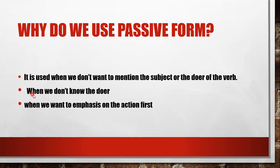Two: when we don't know the doer. ممكن احنا ما بنعرف مين قام بالفعل. مثلاً بندخل غرفة الصف بنلاقي الدروجة مرتبة، بنحكي 'الدروجة ترتبت' - مين رتبها؟ ما بنعرف. هون احنا we don't know the doer.